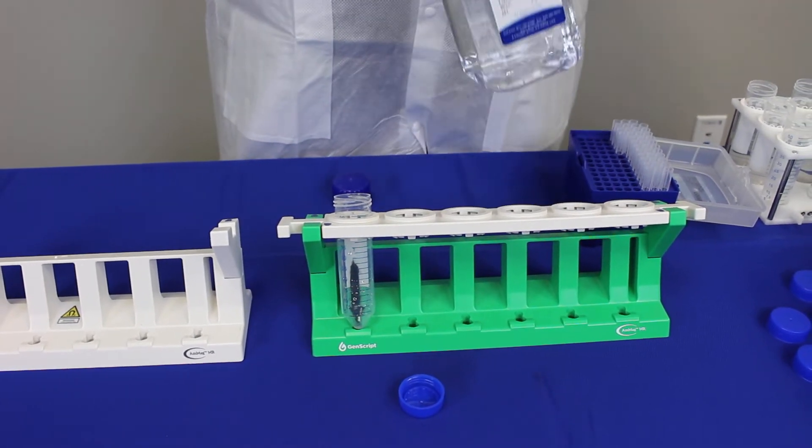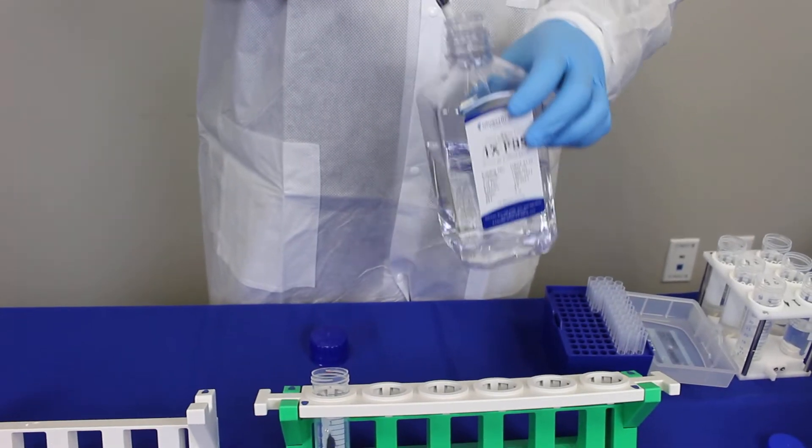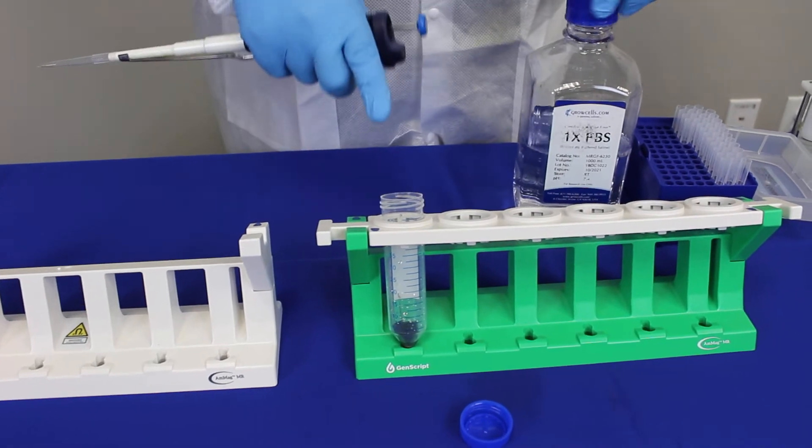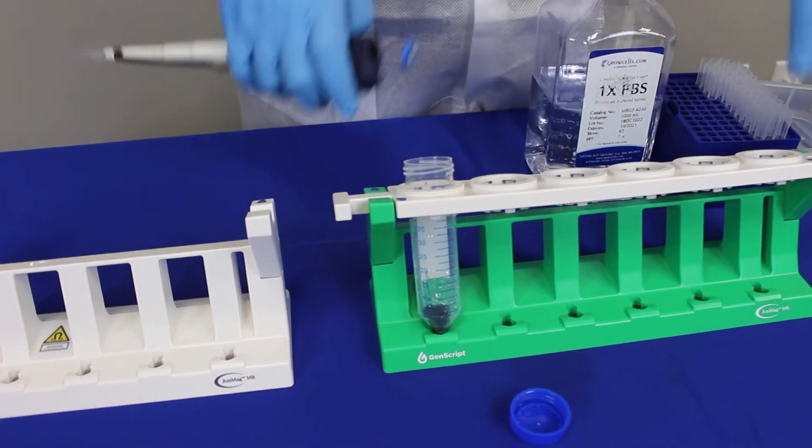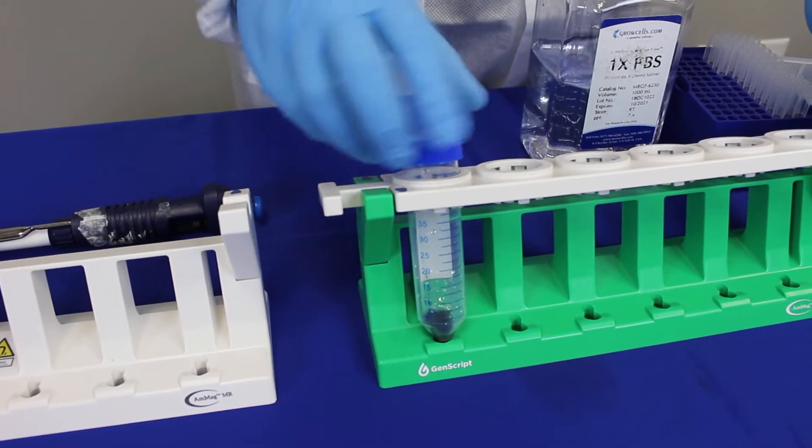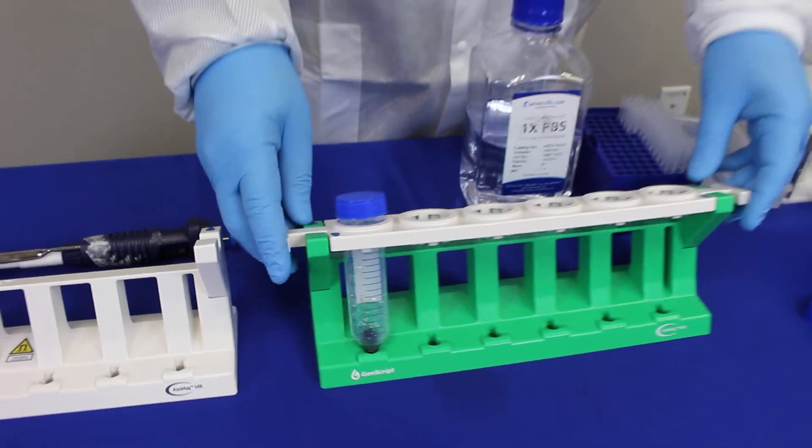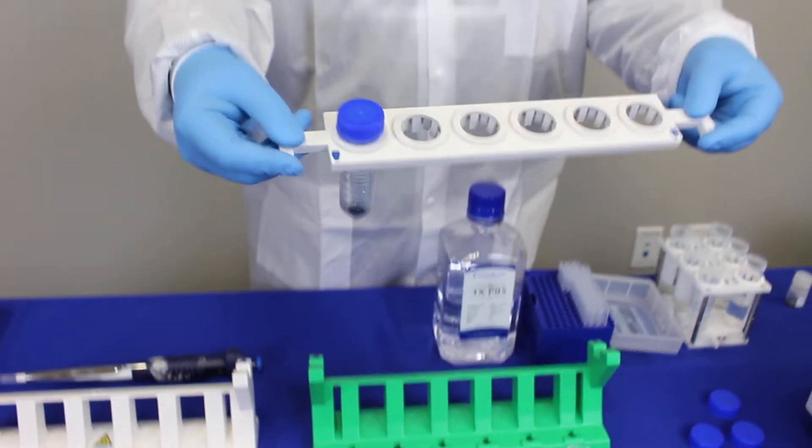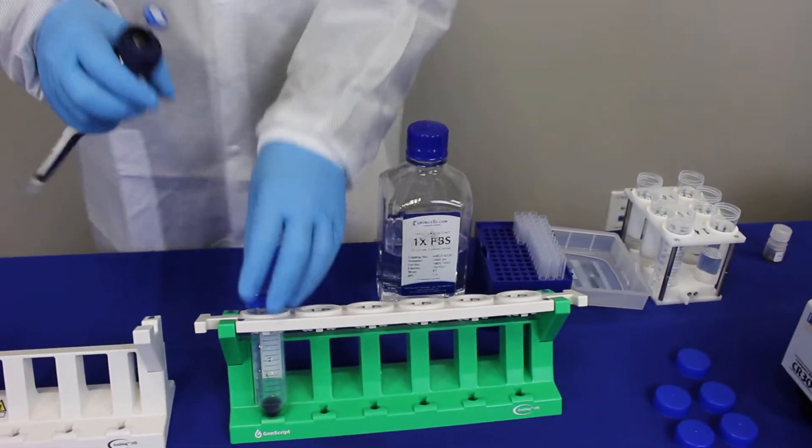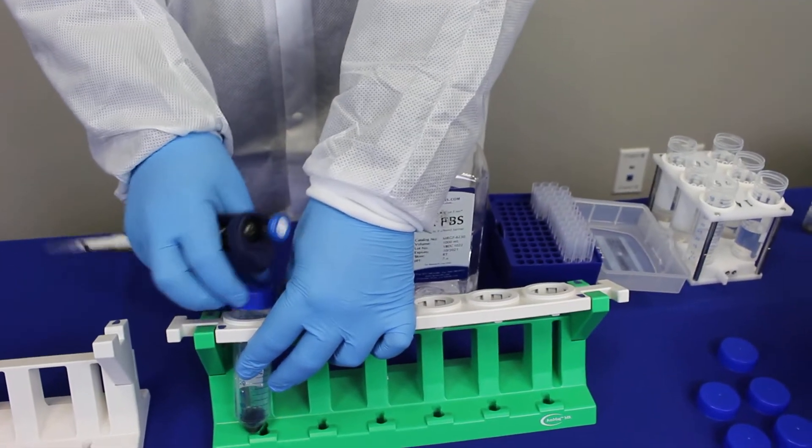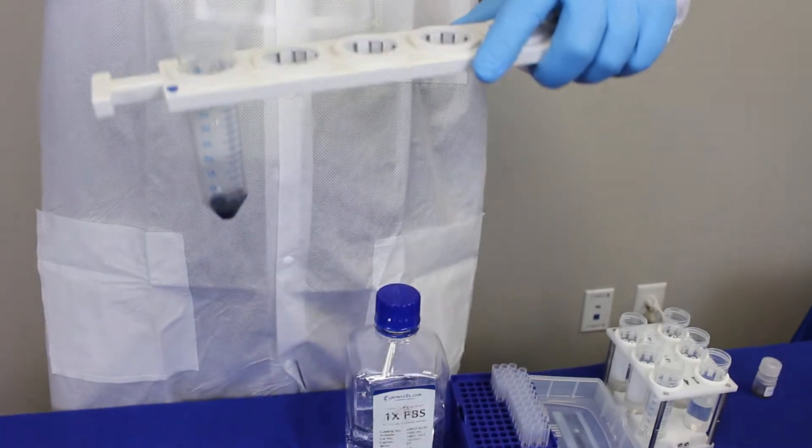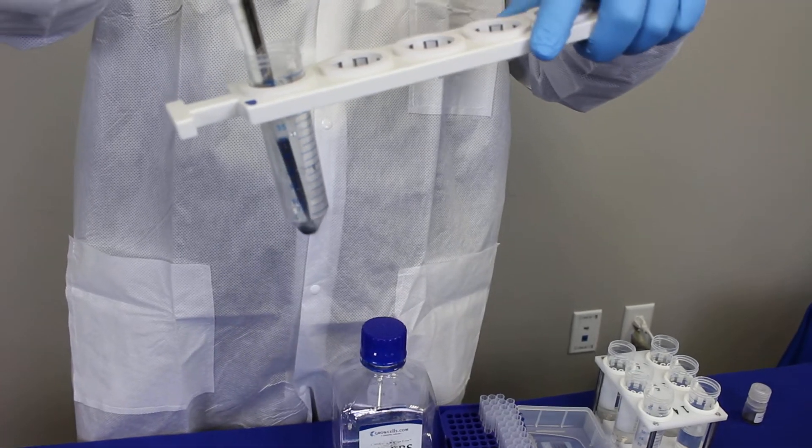Now you have to put equal amount of PBS into the tube, which has the same amount of settled beads. So suppose it's 1 ml of settled beads, you just put 1 ml of PBS here to make it a 50% slurry. Make sure that it is mixed, and once this is mixed, you're going to add it to your samples.